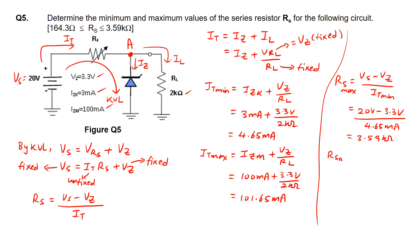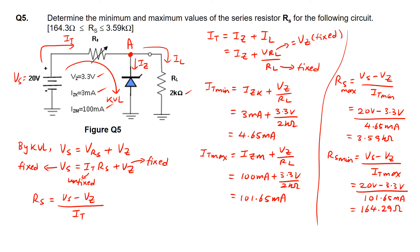For RS_min, we put the denominator as It_max. Substituting: (20 volts minus 3.3 volts) over 101.65 mA gives RS_min equals 164.29 ohms. Therefore the range of RS is from 164.29 ohms to 3.59 kΩ.